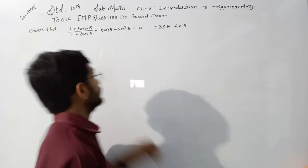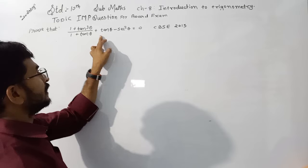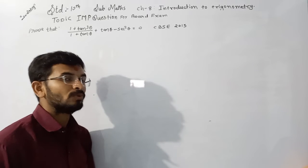Prove that (1 plus tan cube theta) upon (1 plus tan theta) plus tan theta minus sec square theta is equal to 0. We need to prove this.